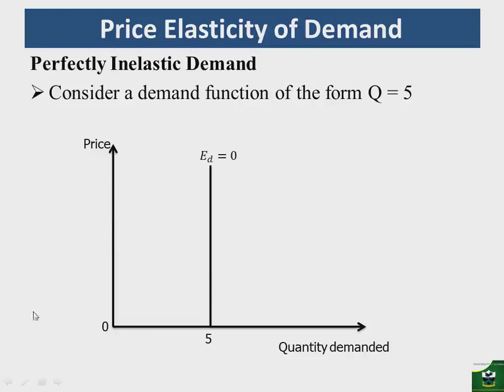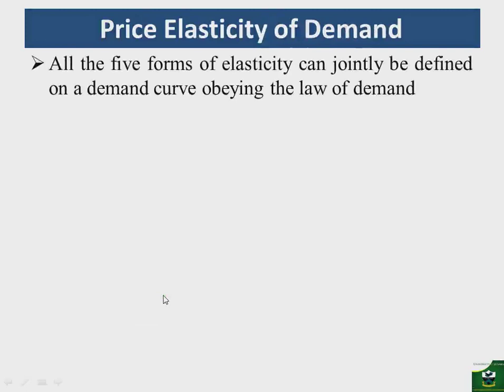All five forms of elasticities can be presented on a single demand curve. When we look at a price at the intercept and draw a straight horizontal line from there, demand is perfectly elastic. And if we draw at the intercept from the horizontal quantity axis, the demand curve will be vertical and demand will be perfectly inelastic. In the middle lies the elastic, unit elastic, and inelastic cases.